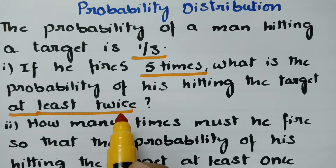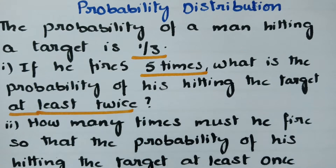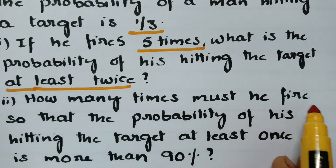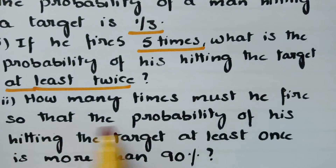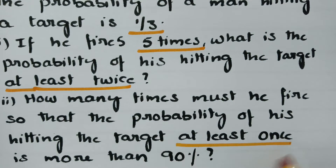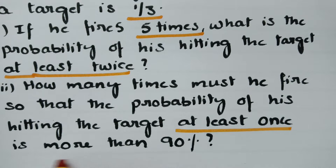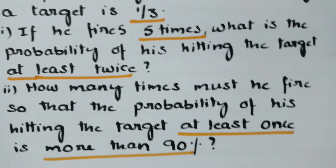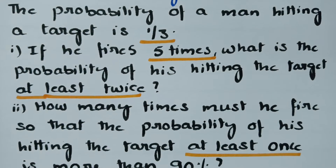At least twice plays a vital role here. And see the second question: how many times must he fire so that the probability of his hitting the target at least once is more than 90%?